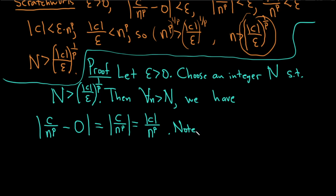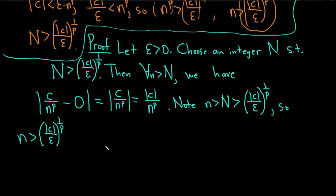Note, trying to reverse engineer it here, little n is bigger than capital N, which is bigger than the absolute value of c over epsilon to the 1 over p. This means little n is bigger than the absolute value of c over epsilon to the 1 over p. We're trying to show this is less than epsilon.